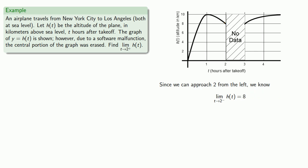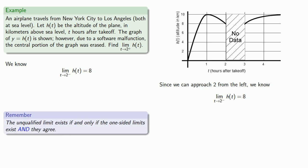Now we don't know whether this is useful, but it is a fact, and so let's go ahead and record it anyway. What else do we know? Well, one useful thing to remember is that the unqualified limit exists if and only if the one-sided limits exist and they agree.